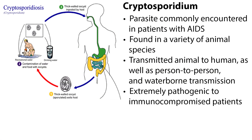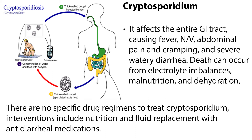Protozoal infections are caused by a variety of organisms, many of which are parasitic. Cryptosporidium is a parasite commonly encountered in patients with AIDS. It is found in a variety of animal species and is transmitted animal to human, as well as person to person and through waterborne transmission. It affects the entire GI tract, causing fever, nausea and vomiting, abdominal pain and cramping, and severe watery diarrhea. Death can occur from electrolyte imbalances, malnutrition, and dehydration. There are no specific drug regimens to treat cryptosporidium; interventions include nutrition and fluid replacement with antidiarrheal medications.